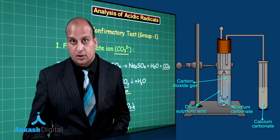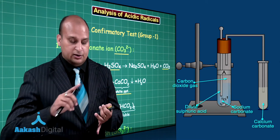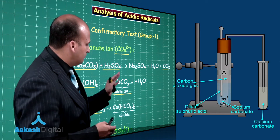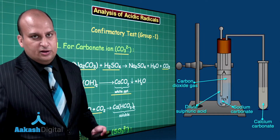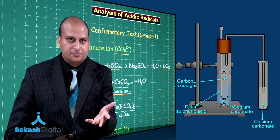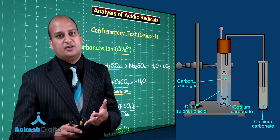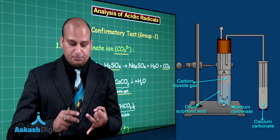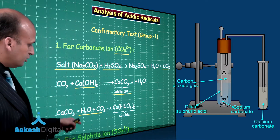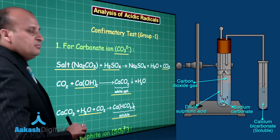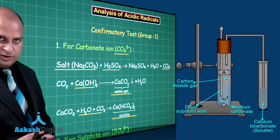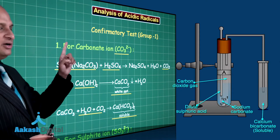In a colorless solution you observe things like color of gas, effervescence, vapors with smell, or a precipitate. When you further pass water and carbon dioxide into that white calcium carbonate precipitate, calcium bicarbonate is formed which is soluble, so the precipitate dissolves. With this observation — precipitate forms and then dissolves — you are sure that the salt contains the carbonate ion.